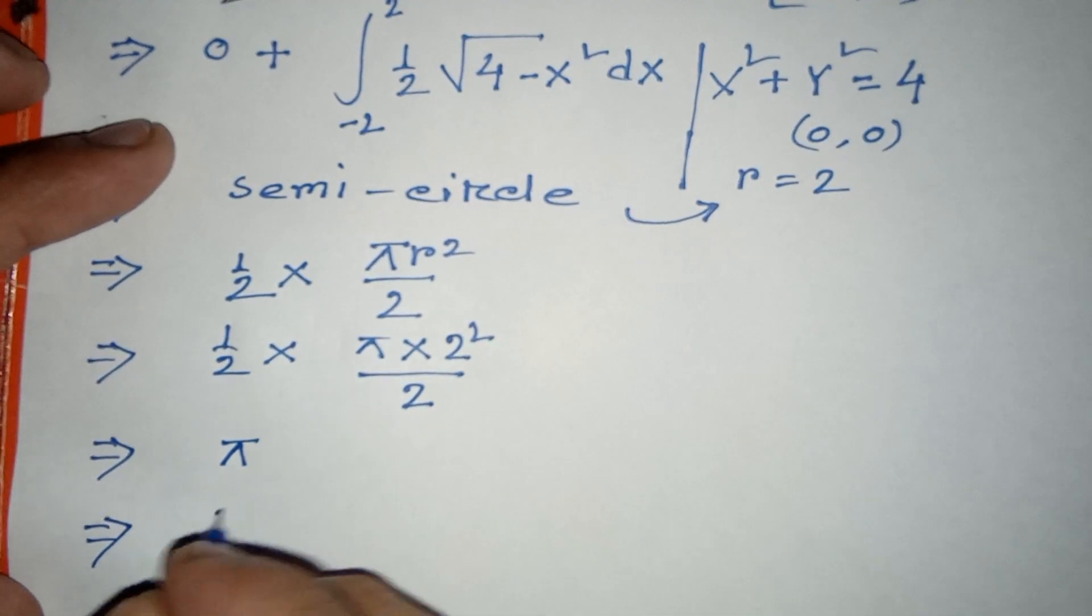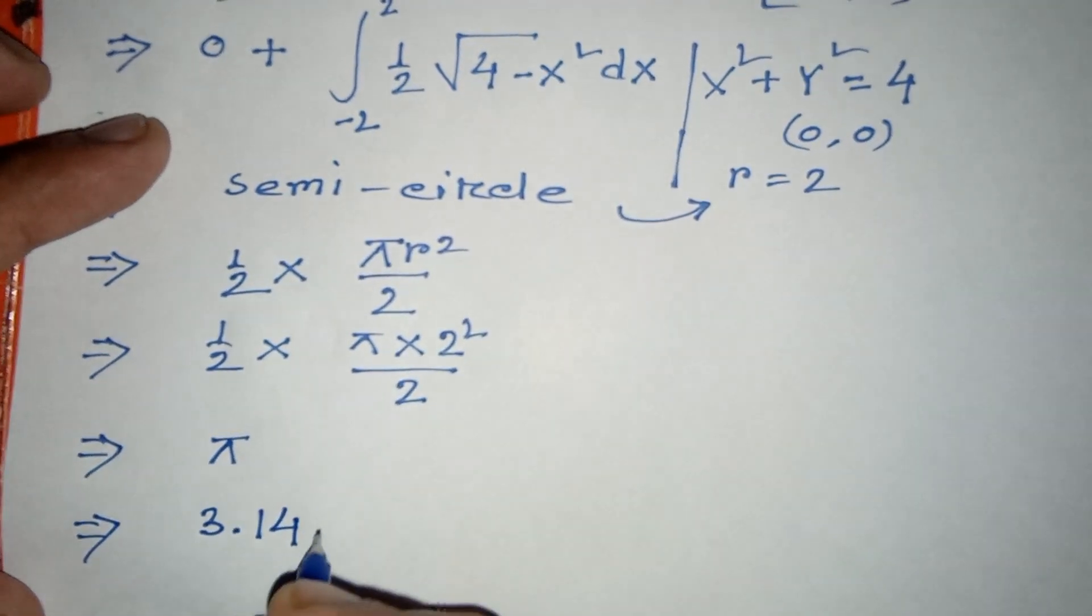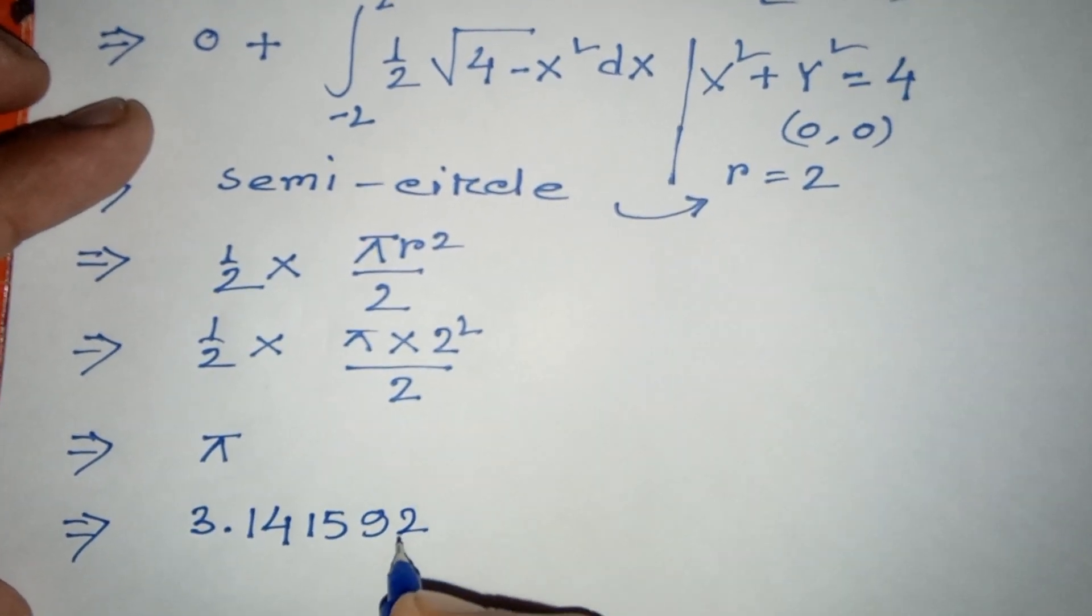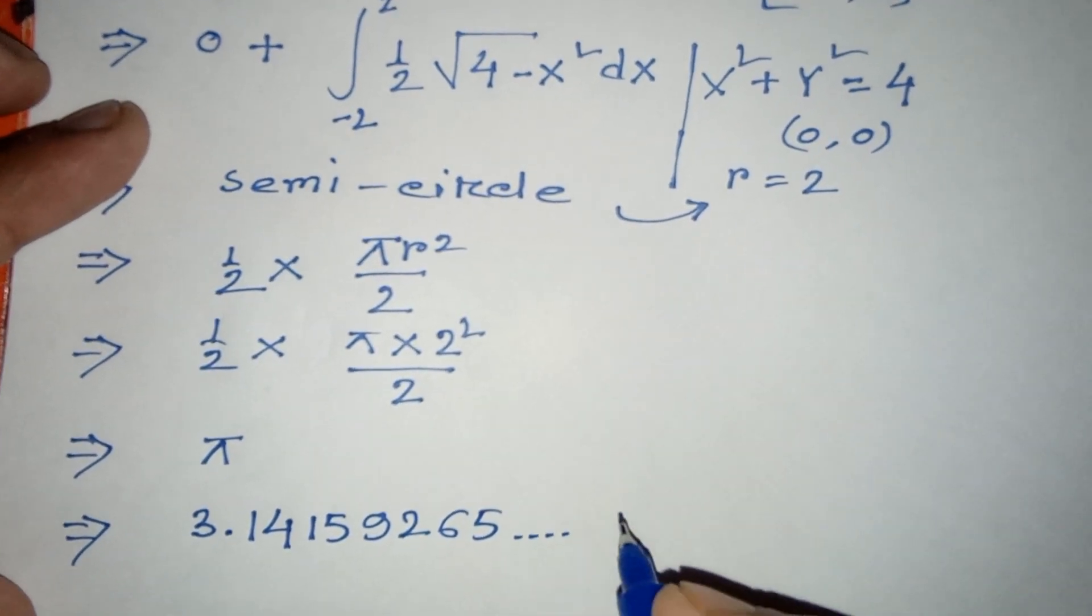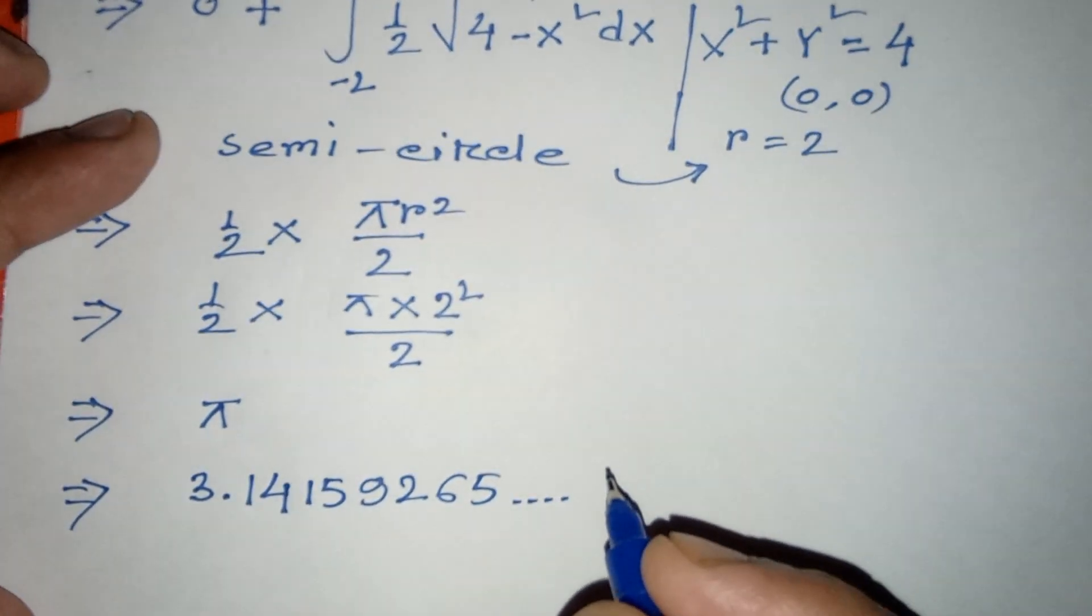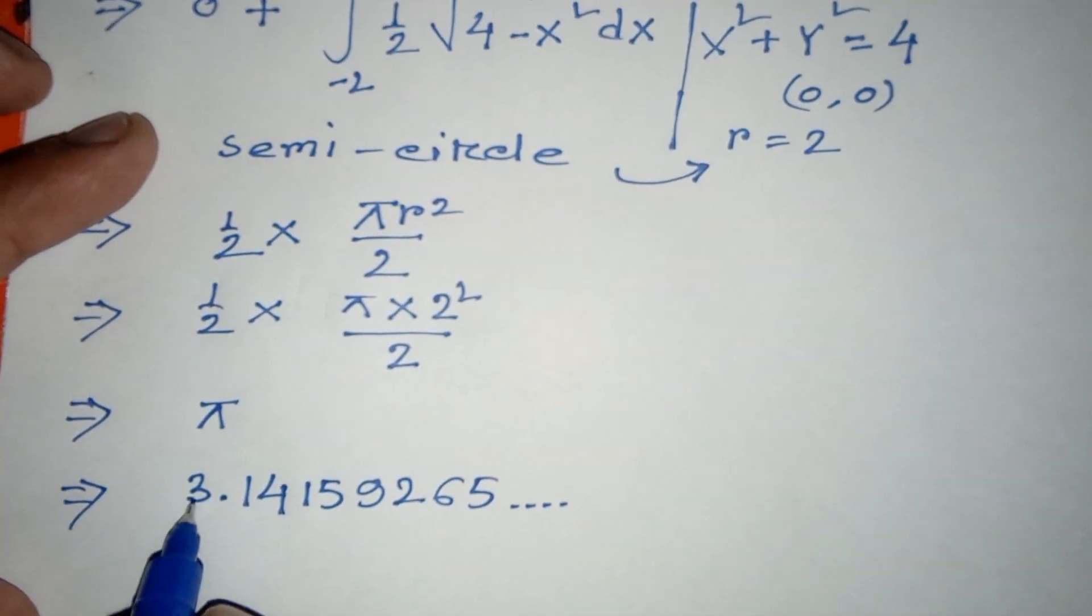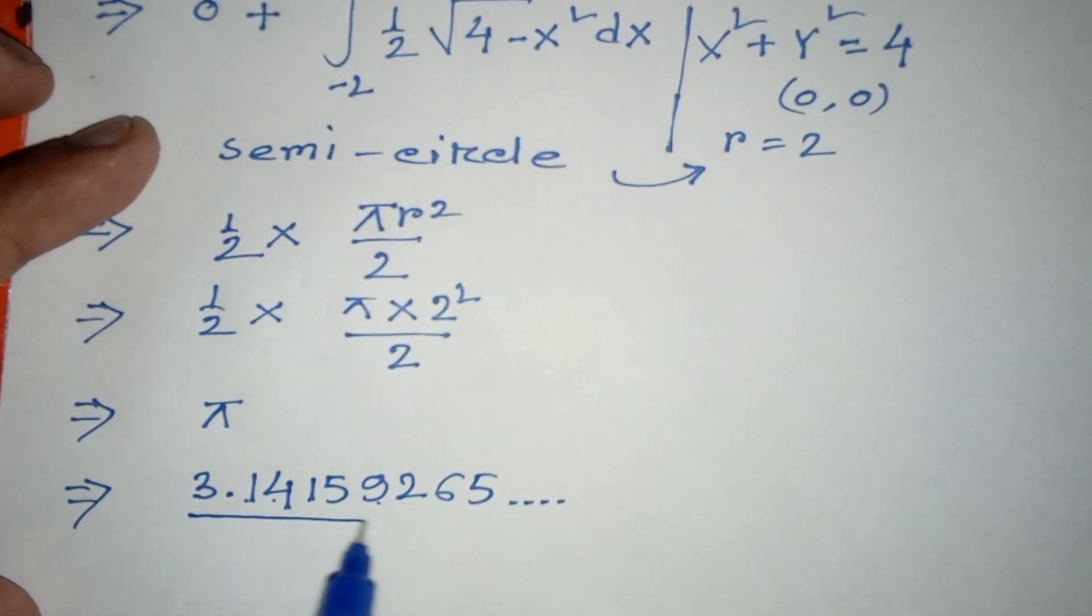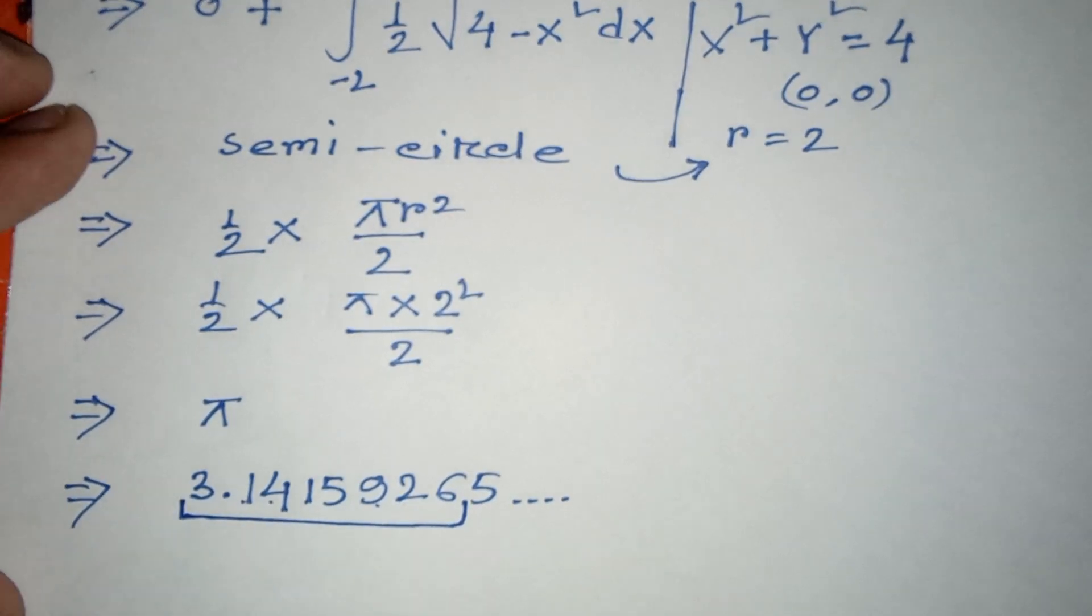So our wifi password is the first eight digits: 1, 2, 3, 4, 5, 6, 7, 8. Thanks for watching.